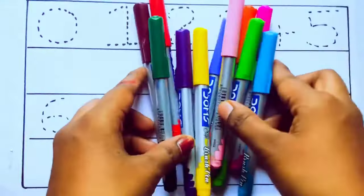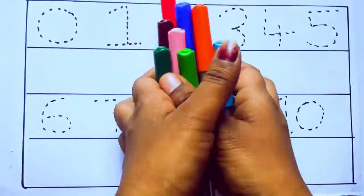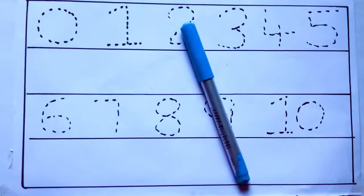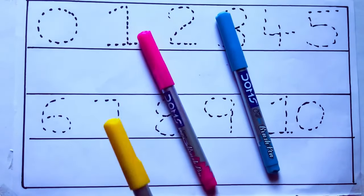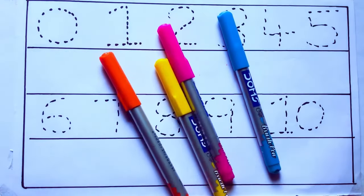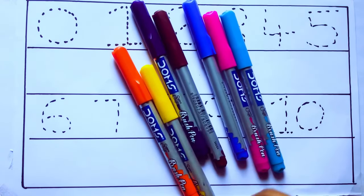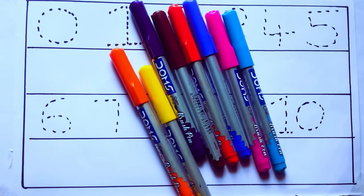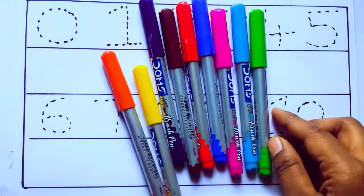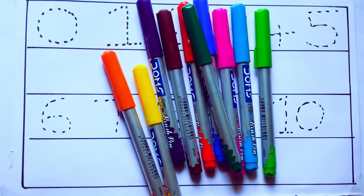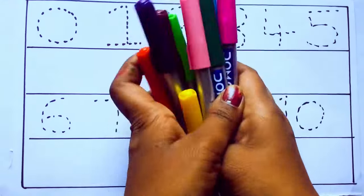Let's learn some colors. These are all the color pencils. Let's learn the names: sky blue color, pink color, yellow color, orange color, violet color, blue color, brown color, red color, green color, and pink color.